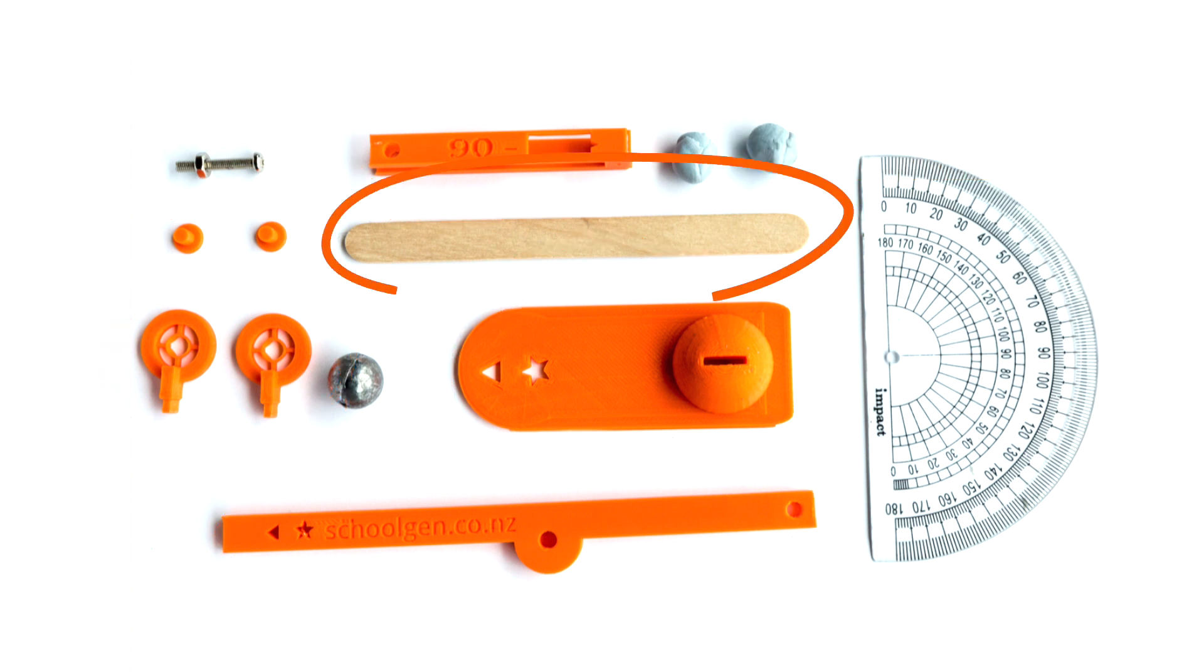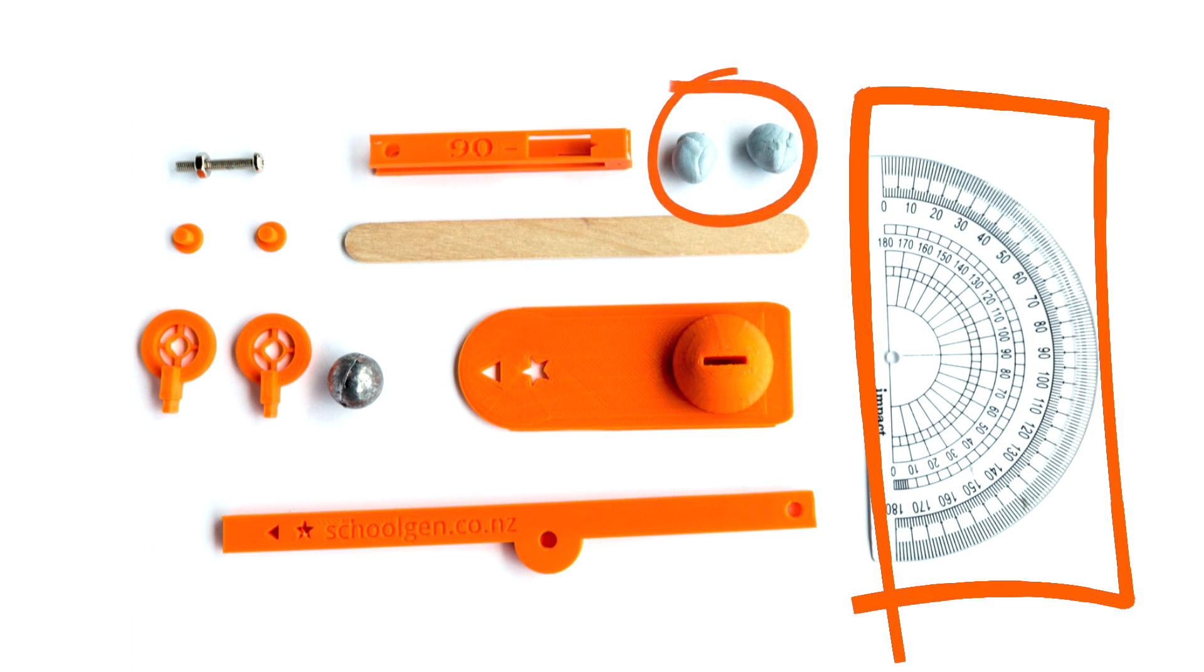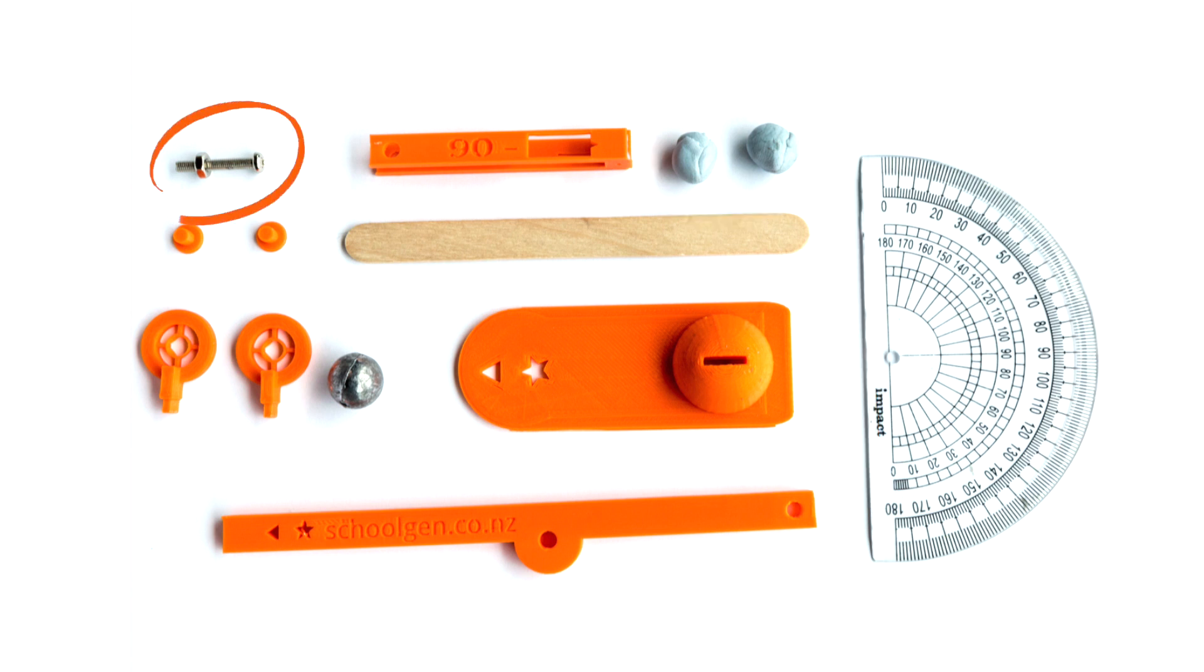You will also need some popsicle sticks, a protractor, two blobs of blue tack, a nut and a bolt, and a small weight to allow it to function properly.